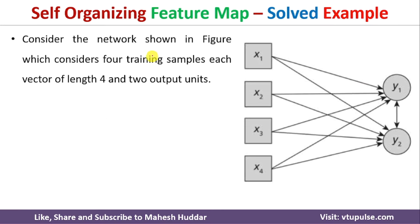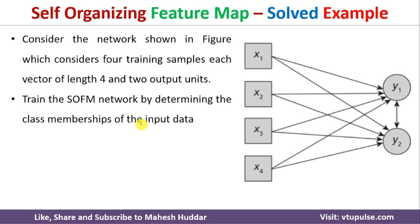Consider the network shown in the figure. In this case, we have been given four training samples. Each sample is a vector of length 4, and there are two output units. X1, X2, X3, X4 are the input training examples, and Y1 and Y2 are the output units. Given this particular network, we need to train the self-organizing feature map by determining the class membership of the input data — that is, assigning each input to one of the output units.